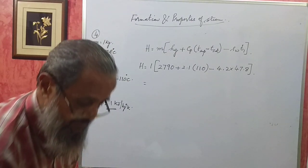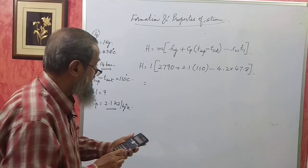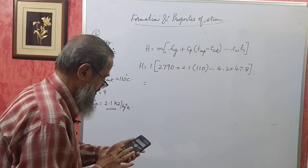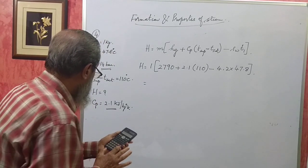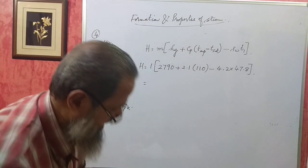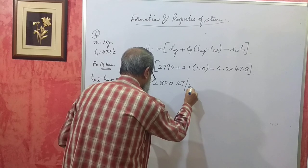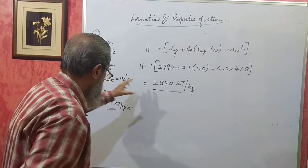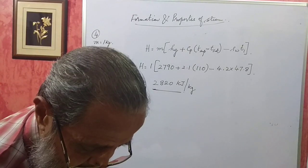If it were wet steam it would have been HF + x·HFG. Calculating: H = 2790 + 2.1 × 110 − 4.2 × 47.8. The answer is 2820 kilojoules. Because it is 1 kg we write it as 2820 kJ/kg. To produce 1 kg of steam at this condition we must supply 2820 kilojoules of heat.